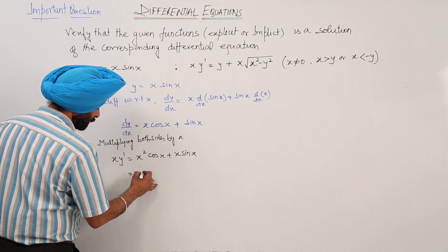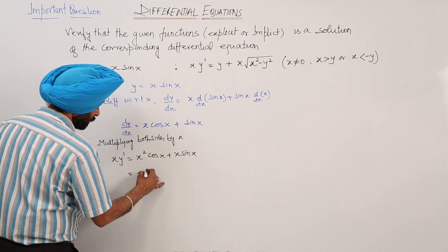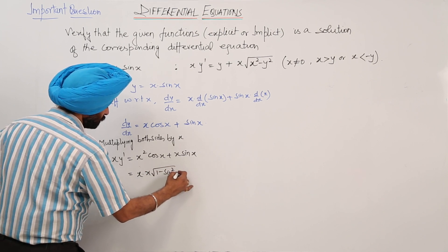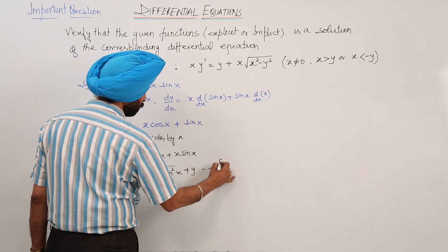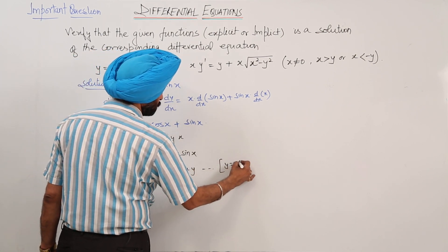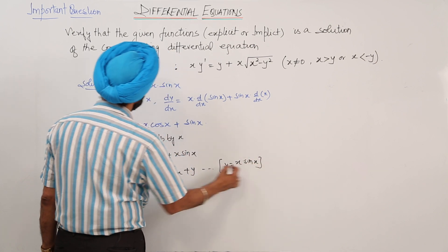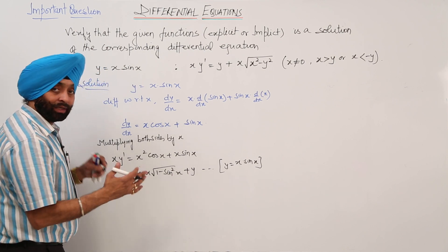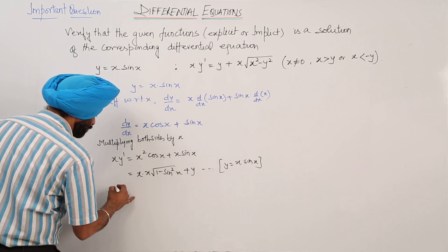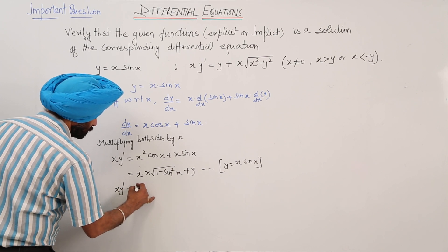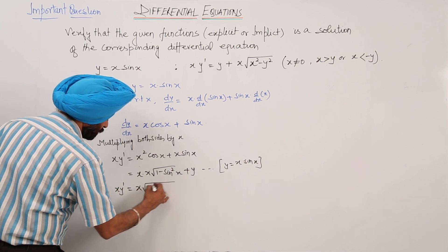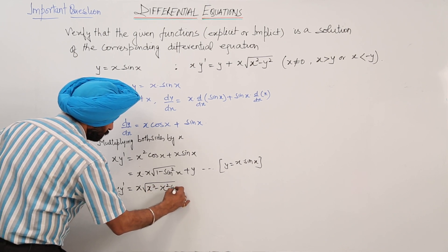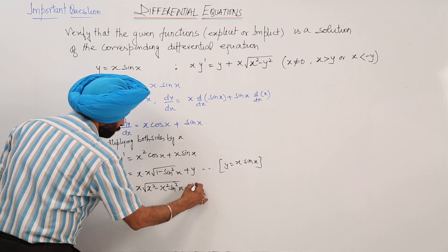We can write this using x with the identity 1 minus sin squared x. Now we have y equals x sin x from the question. When this x goes inside the square root, we get xy' equals x times the square root of x squared minus x squared sin squared x, plus y.